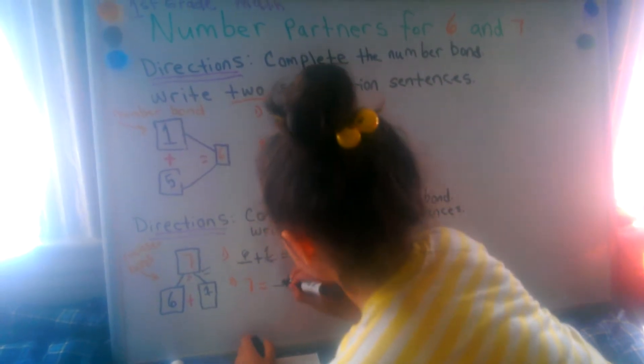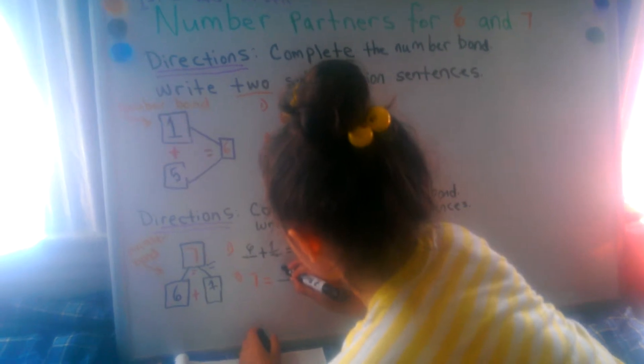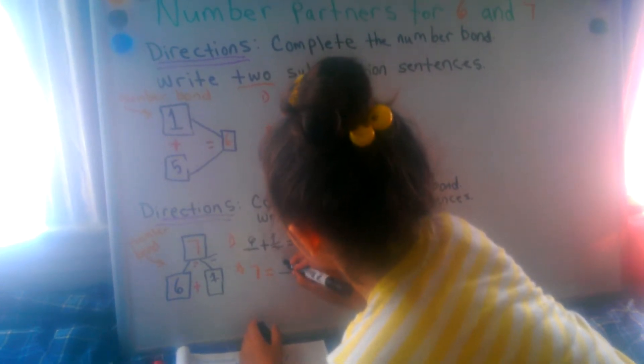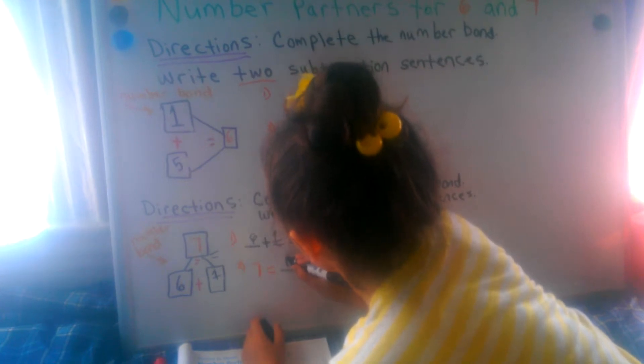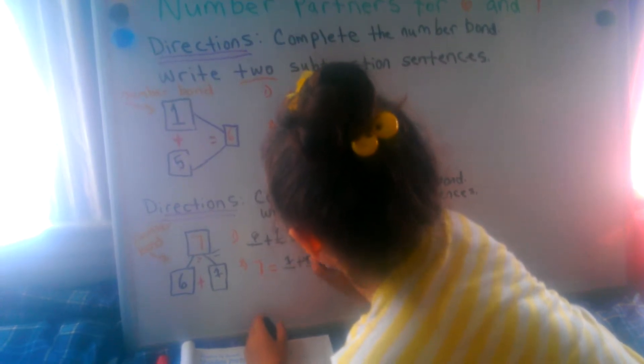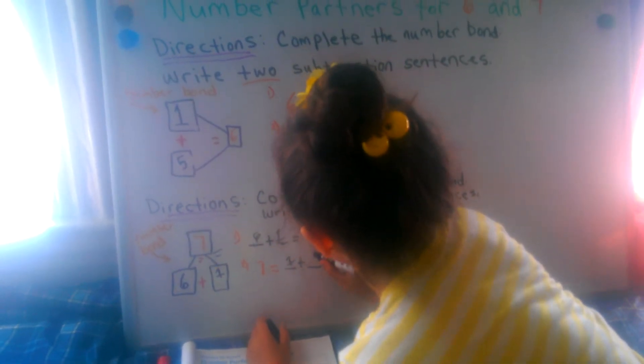Seven plus one. No. Seven equals one plus six. Good girl.